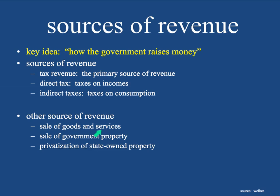Other sources of revenue include the sale of goods and services — sometimes the government actually sells things. The sale of government property and privatization of state-owned property would also be other sources of income. However, in most economics courses, these are not considered the primary source of revenue because they are sort of one-off things — they sell property or privatize a state-owned company. That's not really a steady revenue stream.